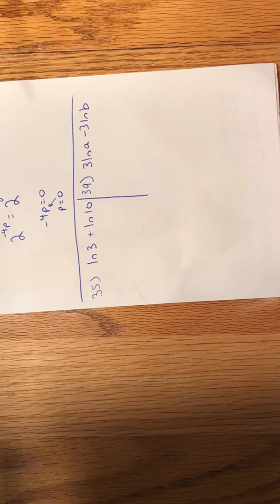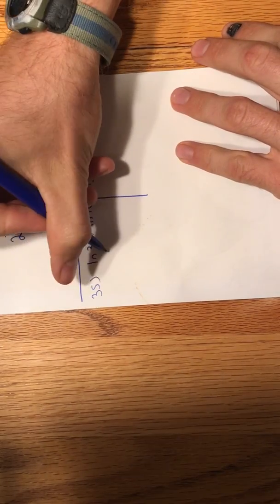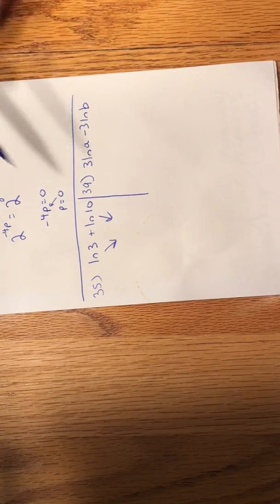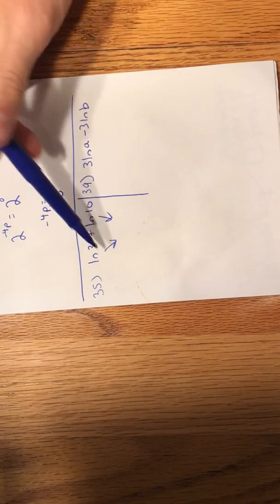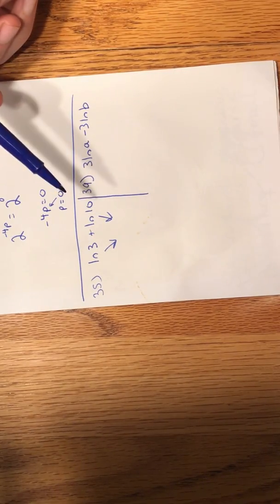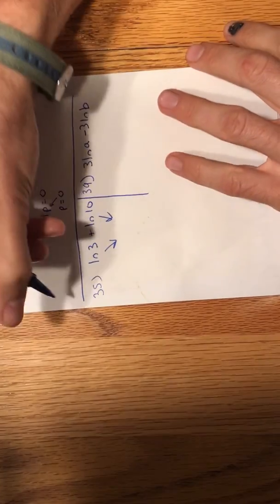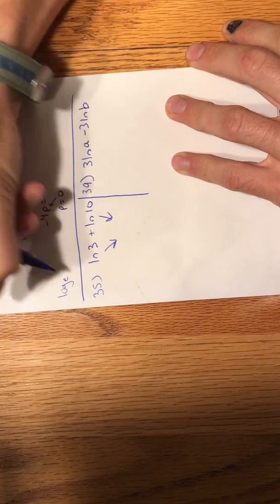So 35, I probably even shouldn't go over because the answer key is going to do it the most justice. But when you are adding two logs together, and I know these are two natural logs, but logs, natural logs, same thing, just a different base. Natural logs is just a log with a base that's special. It's a base of E.